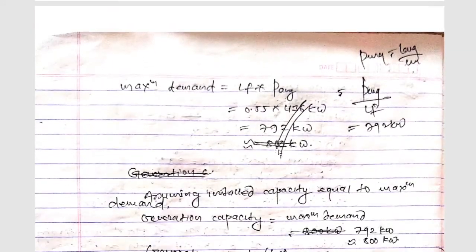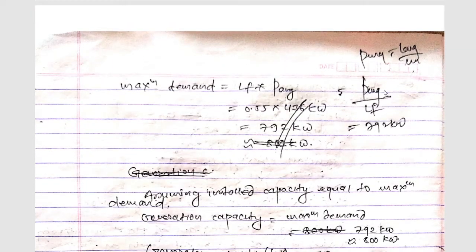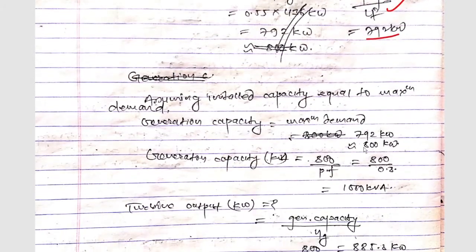Now maximum demand will be average power upon load factor also. So if you calculate we'll get here 792 kilowatt. Now assuming installed capacity equal to the maximum demand, so generation capacity will be the maximum demand and we have the maximum demand as 792 and that is equivalent to 800 kilowatt.